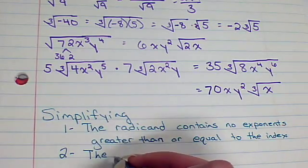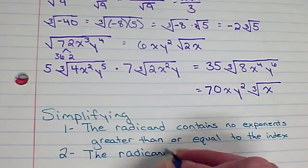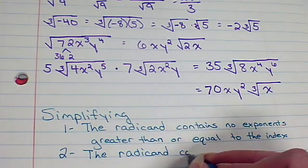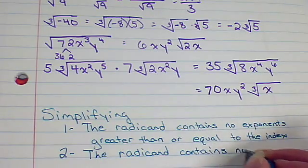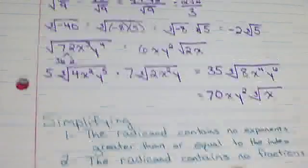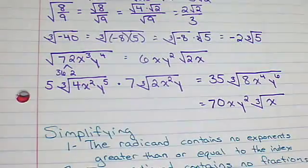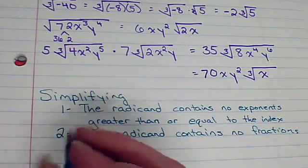Number 2. Another rule that we want to look at is that the radical, the radicand, must, it can't contain, it can't contain, so it contains no fractions. Now, one thing nice, as we saw up here, they're pretty easy to split up. If you have a fraction in there, you can change it to a radical over a radical, and then simplify.